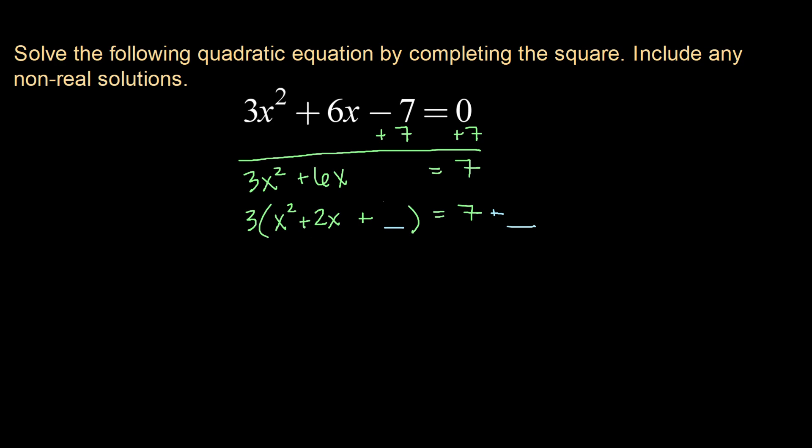So now we follow the same process to fill in our blank for our constant. We're going to do b over 2 squared. Our b is what we have after we've factored out the 3. So in this case, 2 over 2 squared, or 1 squared is 1. So on this side of the equal sign, we're going to fill in our blank with 1.